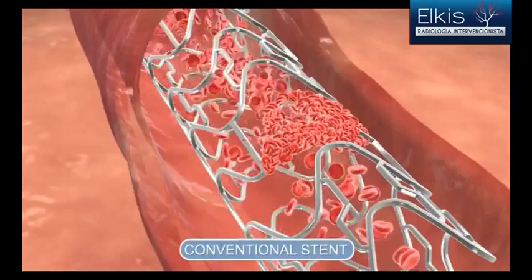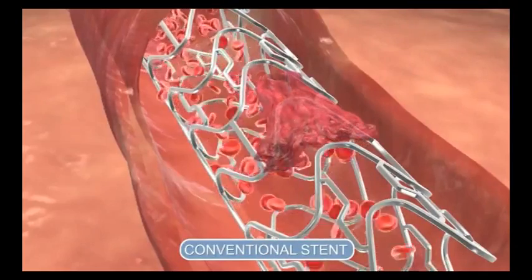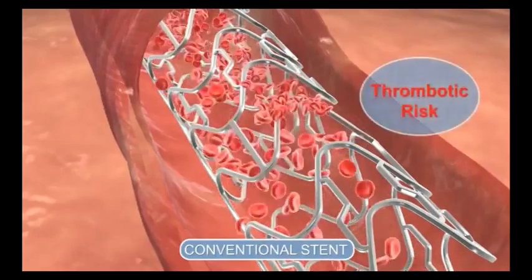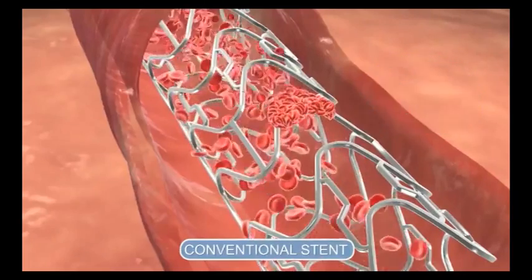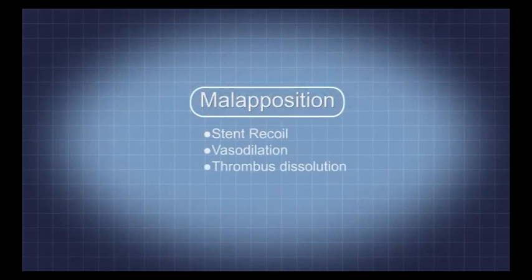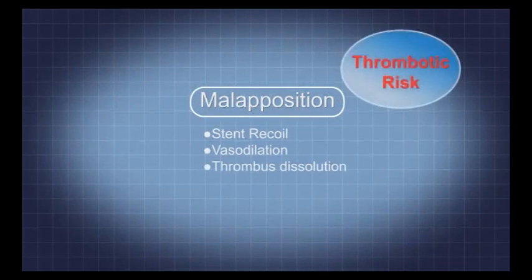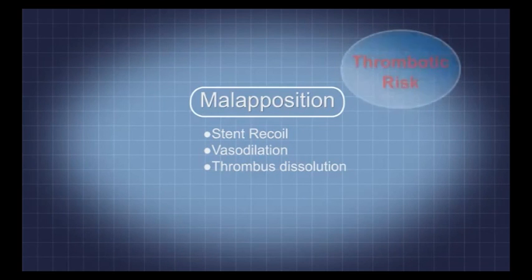Malapposition is the primary predictor of stent thrombosis. Floating struts disturb blood flow and increase thrombotic risk. With conventional stents, malapposition is induced by stent recoil, vasodilation, and thrombus dissolution.